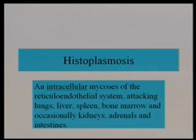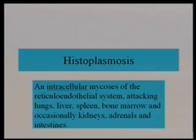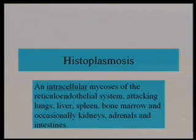This is an intracellular mycosis, meaning it grows within the cells — the RE cells — and it attacks particularly the lung, liver, and spleen. In children, you see liver and spleen infections. Bone marrow is frequently involved because it's all RE cells, and occasionally some other organs.